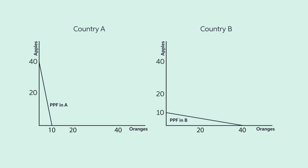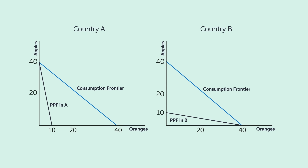Both countries are better off by specializing in the activity for which they have a comparative advantage and then trading between them. With complete specialization, there are 40 oranges and 40 apples on the market — that is more than what was available before. The countries' consumption frontier expands beyond their production possibilities frontier, all the way to the blue line. If they trade one orange for an apple, they could end up consuming 20 apples and 20 oranges, which was unfeasible in the absence of trade. These are the gains of trade.